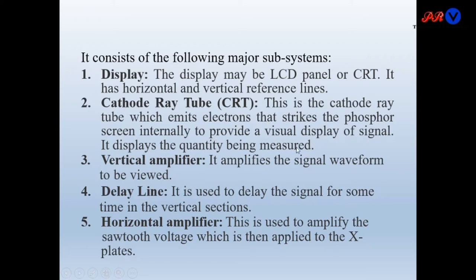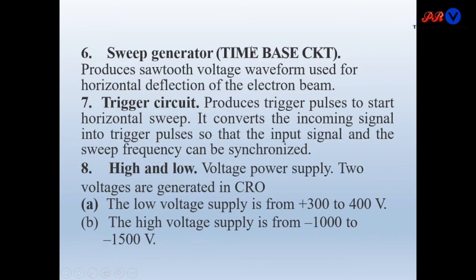It displays the quantity being measured. Vertical amplifier: it amplifies the signal waveform to be viewed. Delay line: it delays the signal for some time in the vertical section. Horizontal amplifier: it amplifies the sawtooth voltage or ramp voltage which is then applied to the X plates or horizontal plates of the CRO. Sweep generator — also known as the time-base circuit — produces the sawtooth voltage waveform for horizontal deflection of the electron beam.